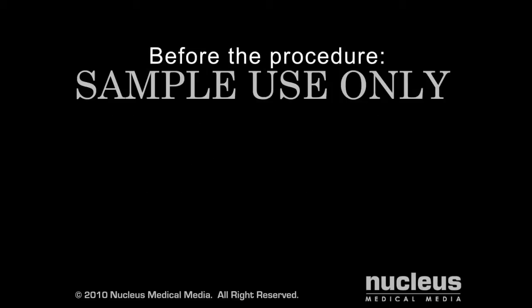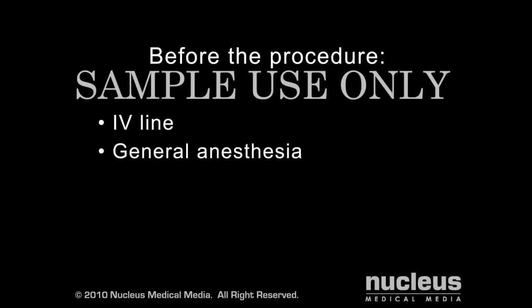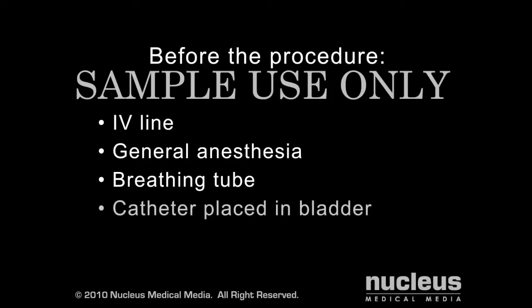Before the open procedure, an IV line will be started to provide you with fluids, antibiotics, and anesthesia. A traditional open surgical repair is performed under general anesthesia, which means you will be asleep for the duration of the procedure. A breathing tube will be inserted through your mouth and into your windpipe to help you breathe during the operation. When you are asleep, a catheter will be inserted into your bladder to drain your urine and monitor your kidney function.